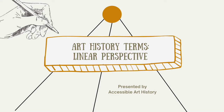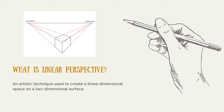Linear, or one-point perspective, is a technique employed by artists to create a sense of three-dimensionality on a two-dimensional surface. While creating the composition, the artist would pick a point on the canvas, called the vanishing point. Then the artist would create their scene around this point so that all the lines converge there. This is what creates a sense of three-dimensionality.